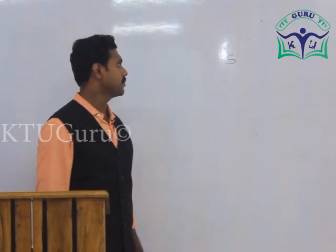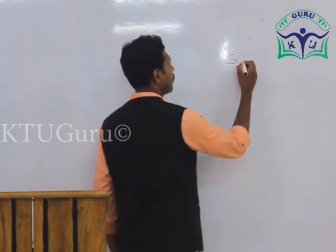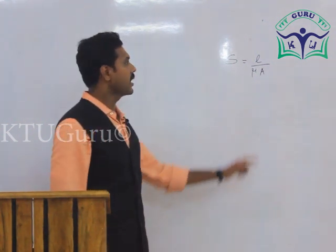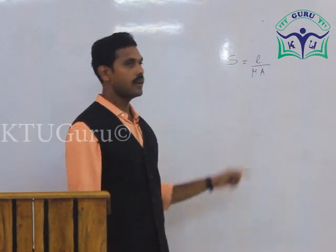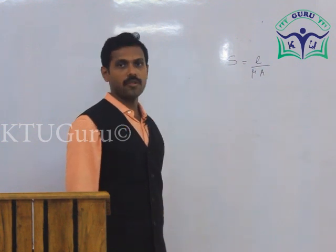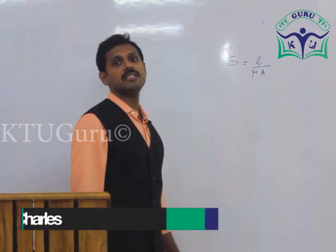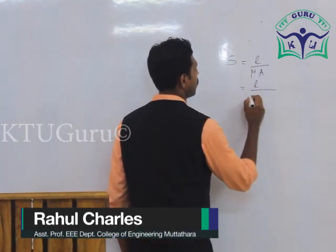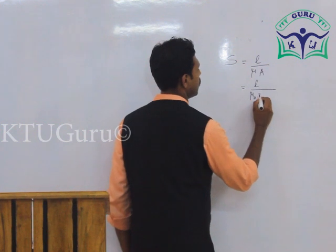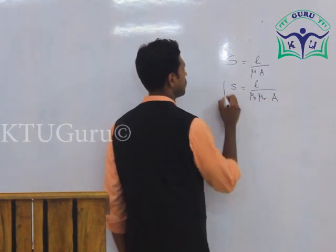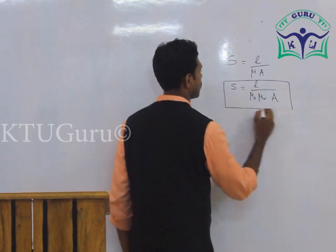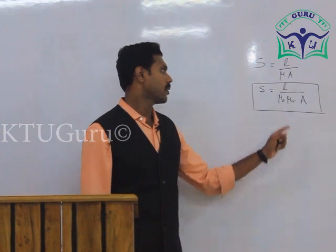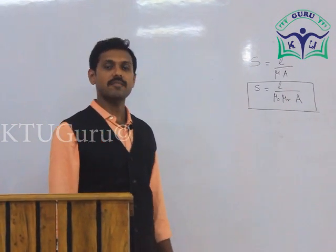There is an expression for reluctance: S equal to L divided by mu times A, where L denotes the length of the magnetic material, A denotes the cross-sectional area of the magnetic material, and mu is the permeability of the magnetic material. That means mu equals mu-zero times mu-R times A. In the case of free space or vacuum, the value of relative permeability mu-R is 1.